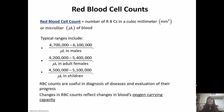The red blood cell count is the number of red blood cells in a cubic millimeter or microliter of blood. Typically males are in the range of 4.7 to 6.1 million, females 4.2 to 5.4 million, and children 4.5 to 5.1 million. Red blood cell counts are useful in diagnosing diseases and evaluating progress. Changes in red blood cell counts reflect changes in the blood's oxygen-carrying capacity because red blood cells carry oxygen to the rest of the body.